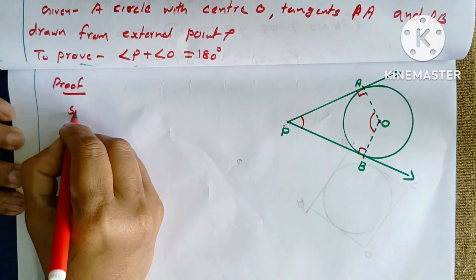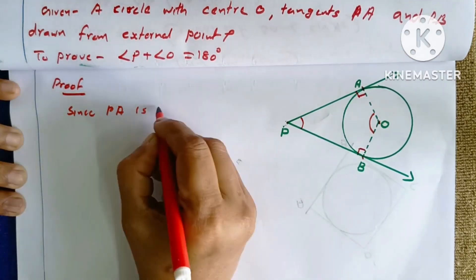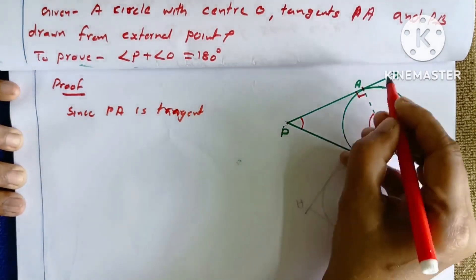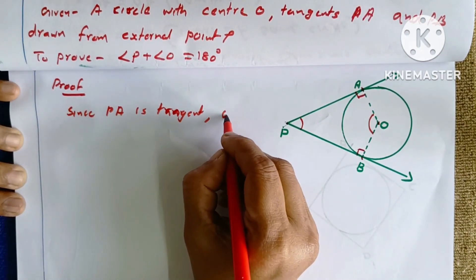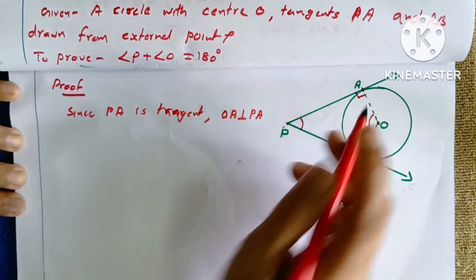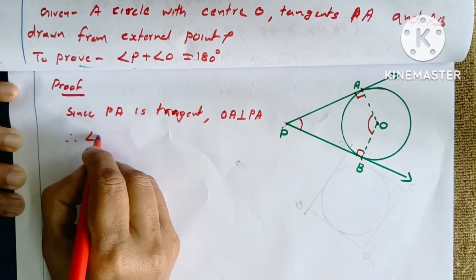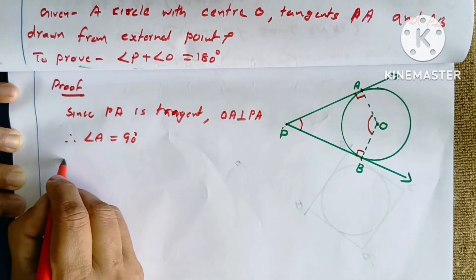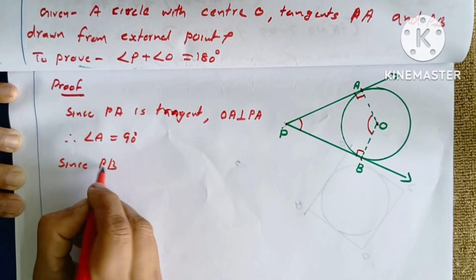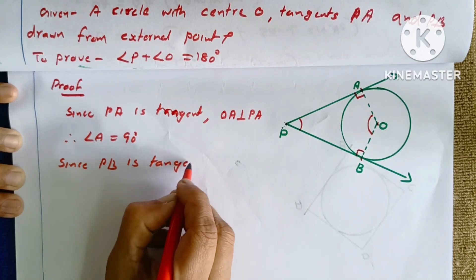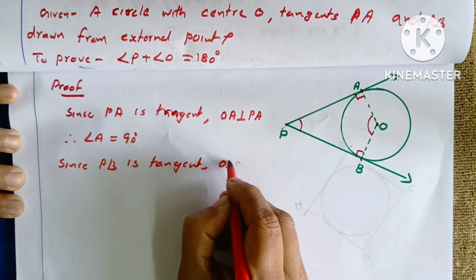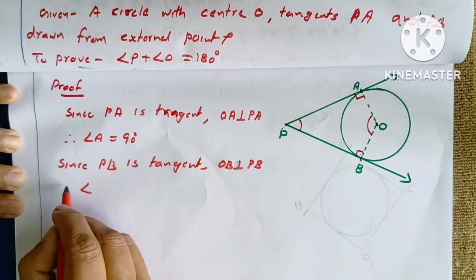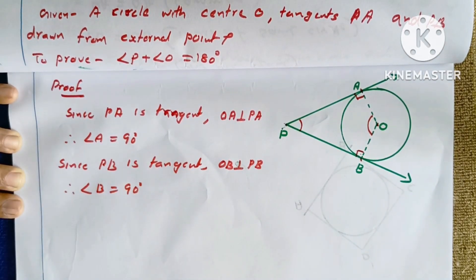Since PA is a tangent, OA is perpendicular to PA, so angle OAP equals 90 degrees. Since PB is a tangent, OB is perpendicular to PB, therefore angle OBP equals 90 degrees.